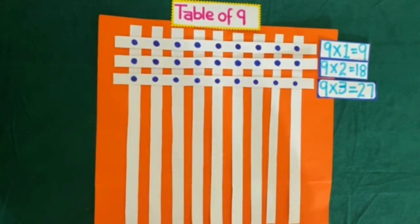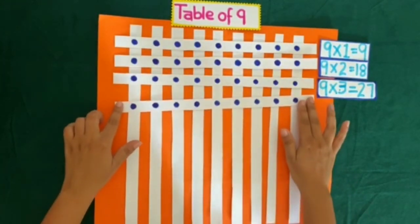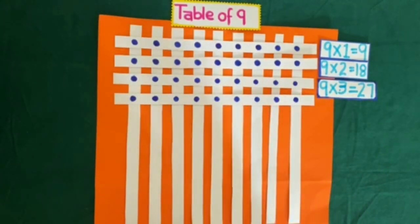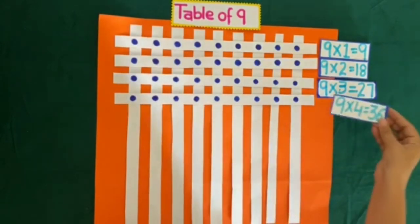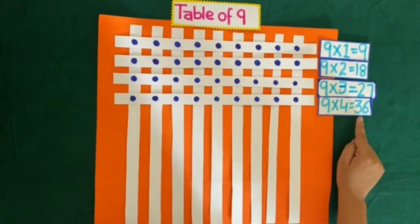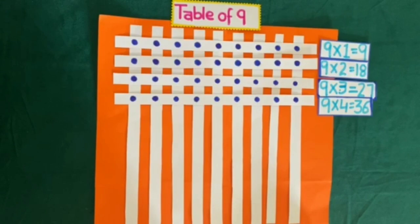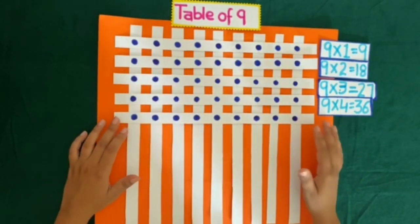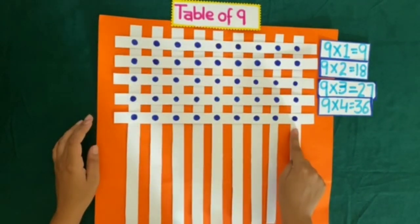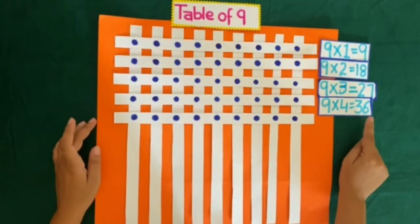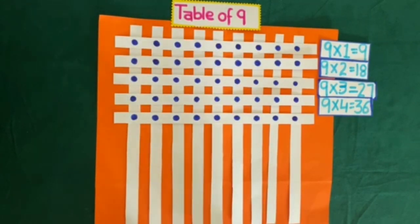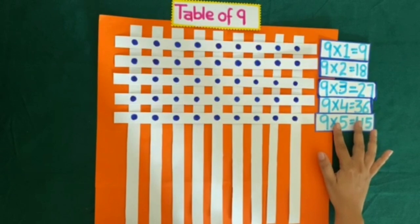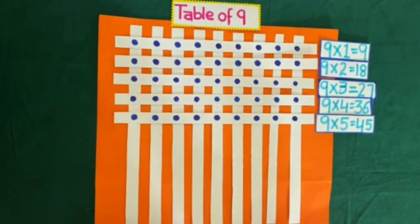By placing another horizontal strip, we get 27 plus 9 is equal to 36, which means 9 fours are 36. Now place the 5th horizontal strip, which has 9 intersection points. So 36 plus 9 is equal to 45. So 9 fives are 45.